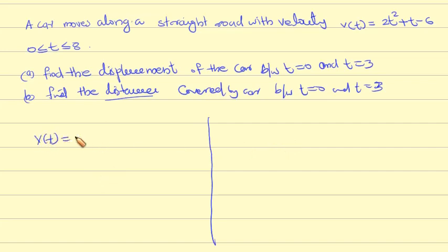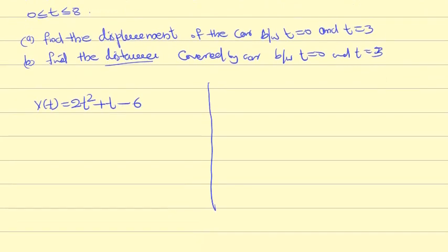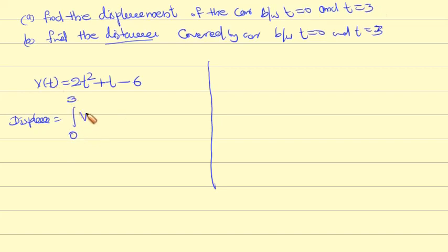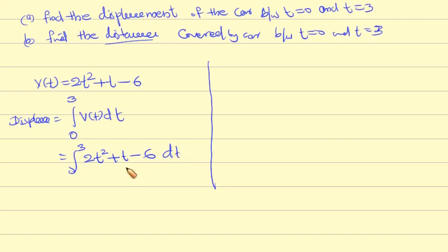v(t) = 2t² + t - 6, for 0 ≤ t ≤ 8. First question: find the displacement. The displacement equation is: displacement = integral from 0 to 3 of v(t) dt = integral from 0 to 3 of (2t² + t - 6) dt.